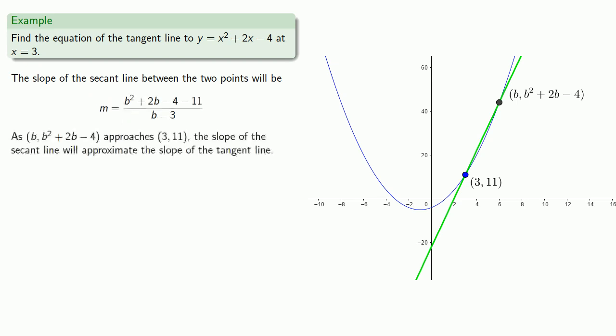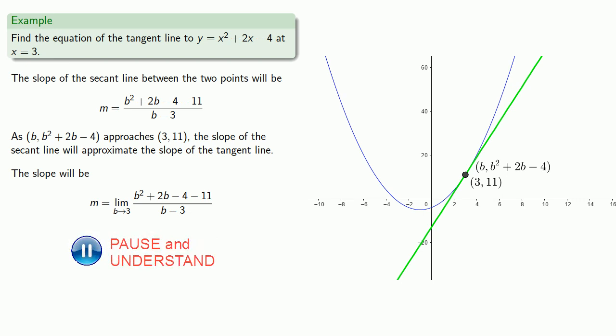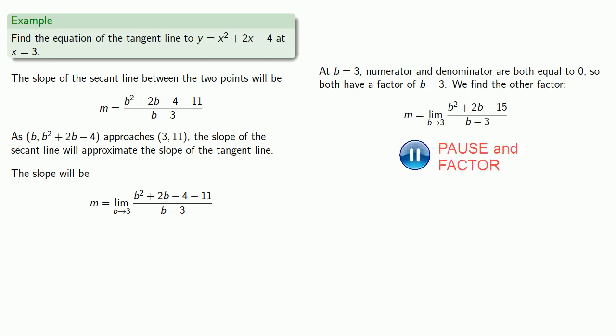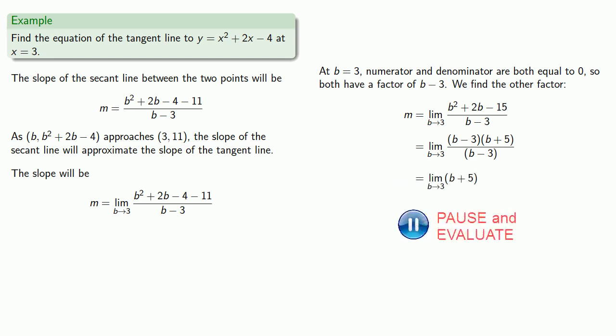As our second point approaches the first, the slope of the secant line will approximate the slope of the tangent line. So that says we should take a limit. To find the limit, we note that at b = 3, both numerator and denominator are equal to 0. So both have a factor of (b - 3), and we find the other factor. We can simplify and find the limit. Now we have a slope and the point on the line, so we can write the equation of the line.